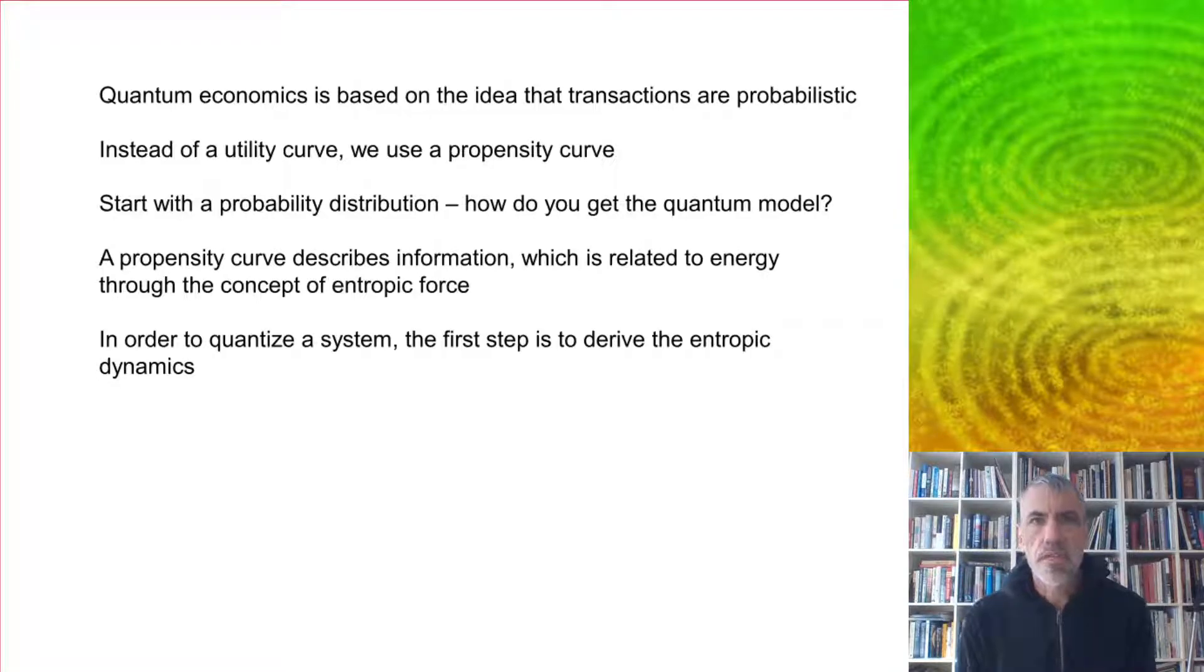Instead of having a utility curve to model a consumer or supplier, we're going to use a propensity curve, which describes a probability distribution, the probability of buying or selling at a particular price. This seems a reasonable way to describe people's behavior, but if we start with a probability distribution, how would we get the quantum model from that?